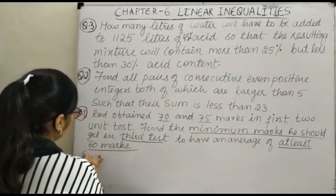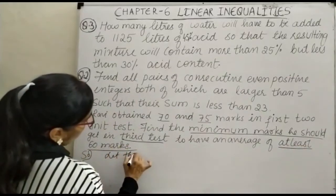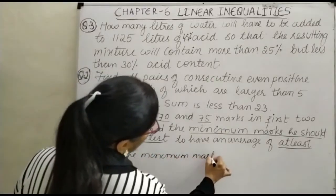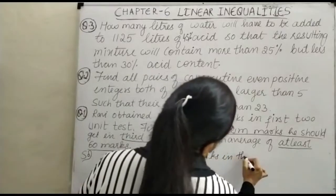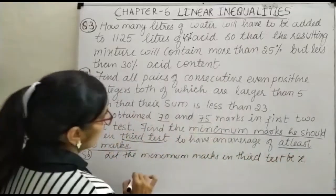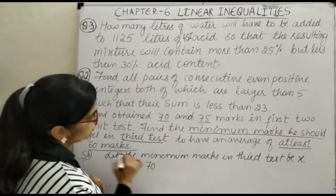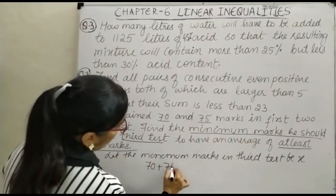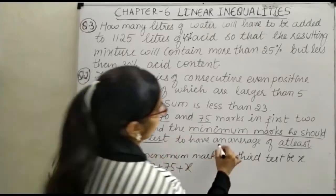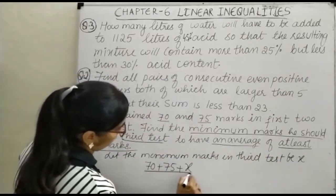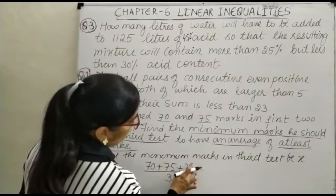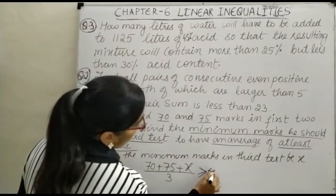Let our solution — let the minimum marks in the third test be X. So we can see here: 70 is the first unit test mark, 75 is the second, and X is the third. Now, average of three tests divided by 3 should be greater than or equal to 60.